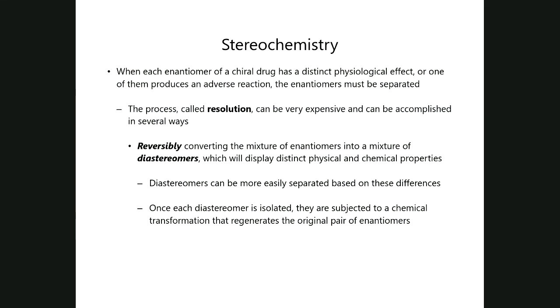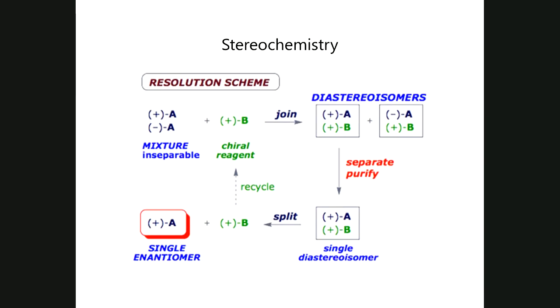One of the more efficient resolution methods is to reversibly convert enantiomers to a mixture of diastereomers. Because diastereomers exhibit different physical and chemical properties, they can be more easily separated. Once you isolate the diastereomers from each other, the key is that the conversion is reversible — you can remove whatever agent was added, returning your compounds to what they originally were as a pair of enantiomers. This is accomplished after the separation has taken place, so you can actually manage to isolate them.